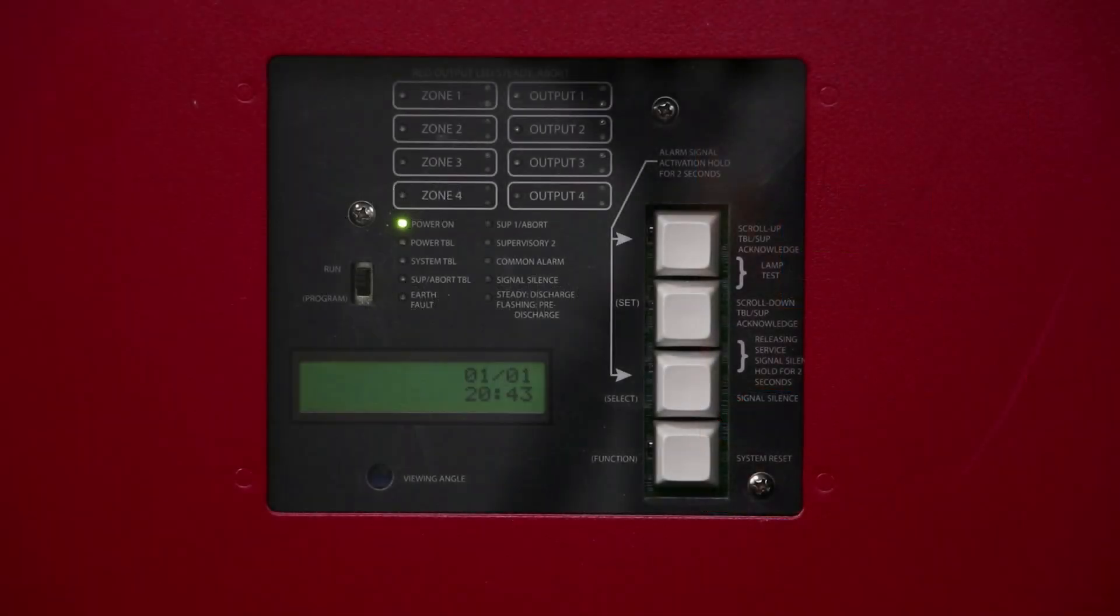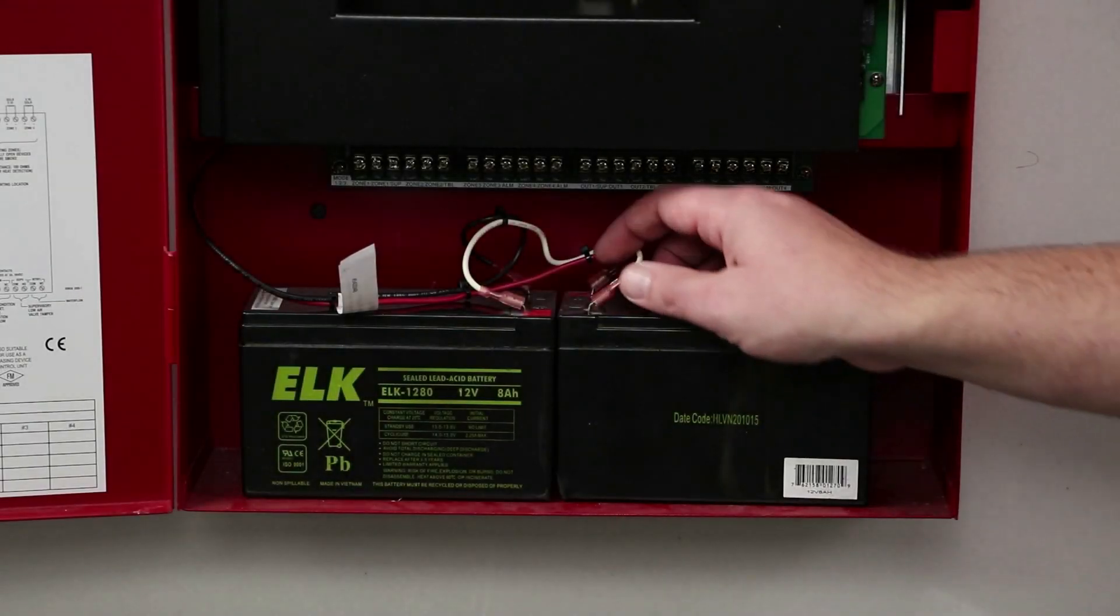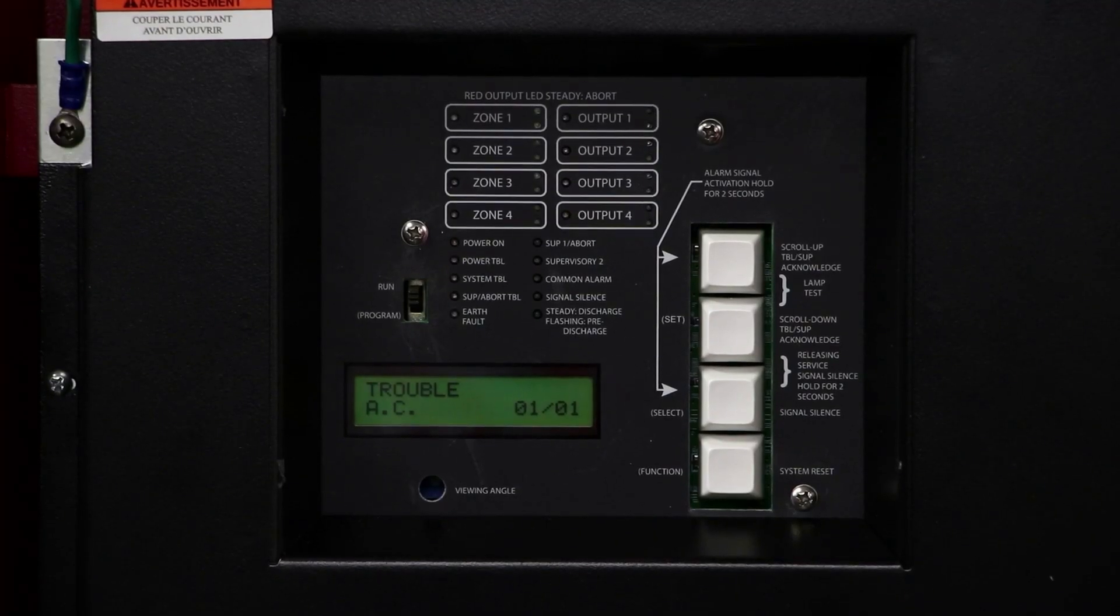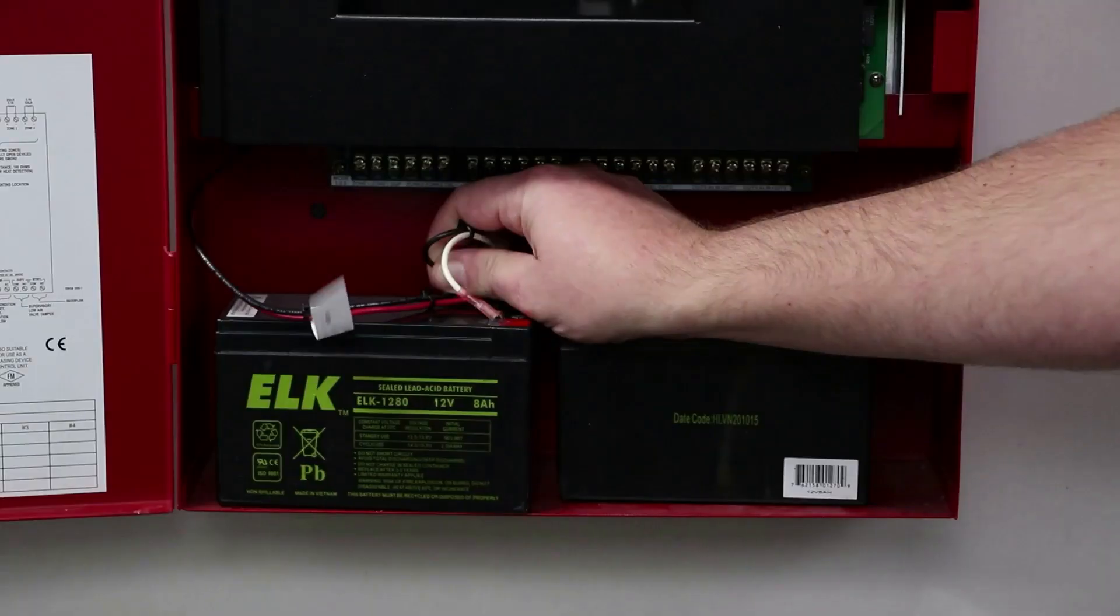In order to replace a PFC 4410 RC with the new PFC 4410 G3, first shut off the main AC power at the circuit breaker. The AC trouble light will illuminate. To fully power down the panel, disconnect the batteries and remove them from the enclosure and set aside.